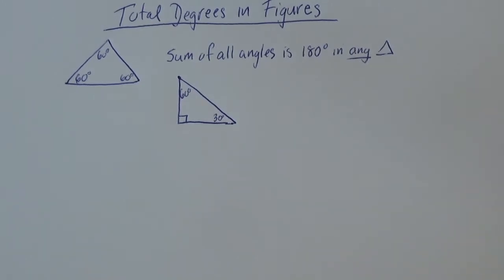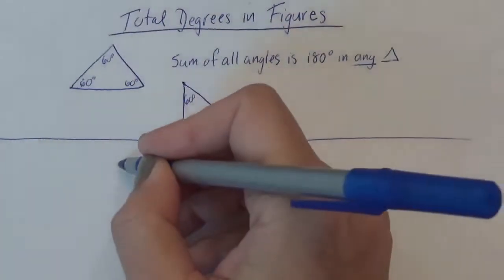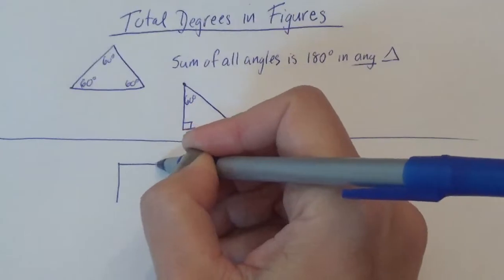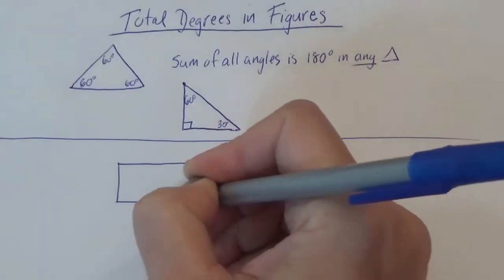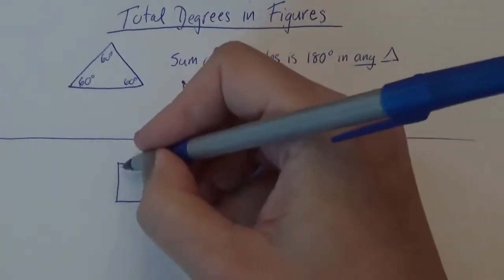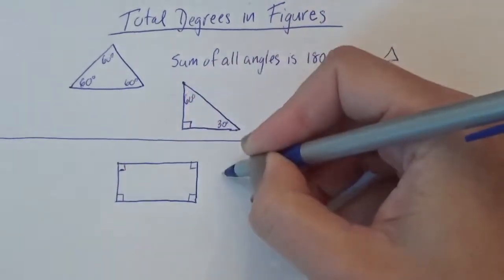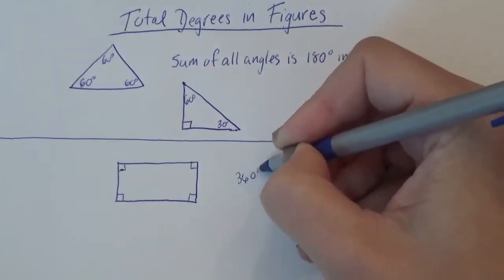Now you can use that fact to figure out more shapes. So if I drew, let's do a rectangle, four sides. Actually this one we can figure out, that's 4 × 90 degrees. Four times 90 is 360. Now that one was easy.